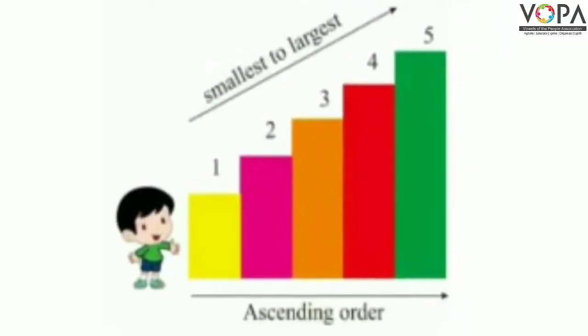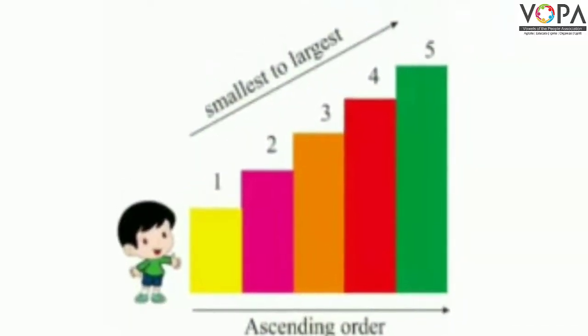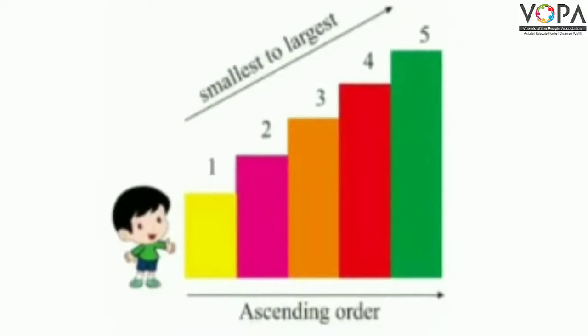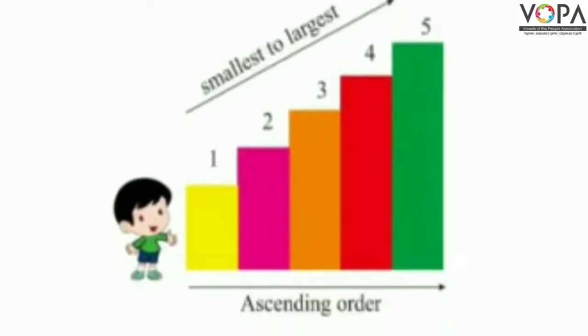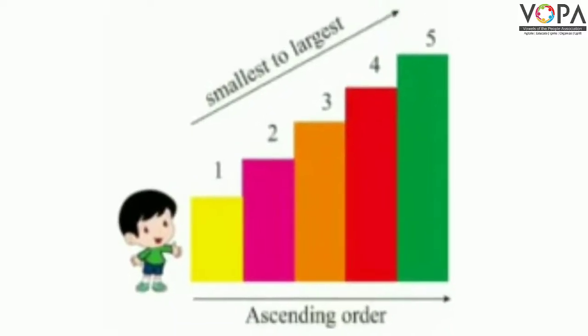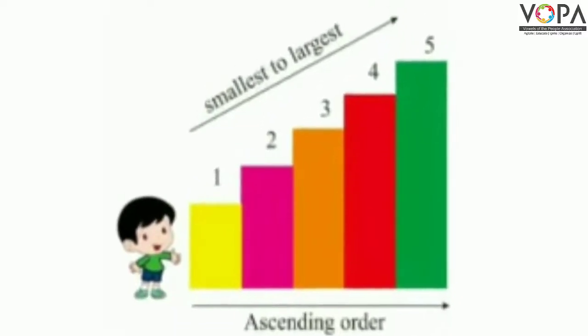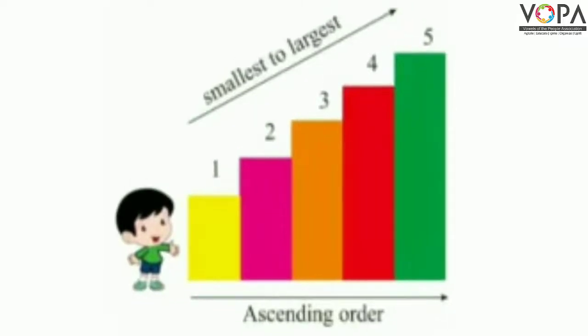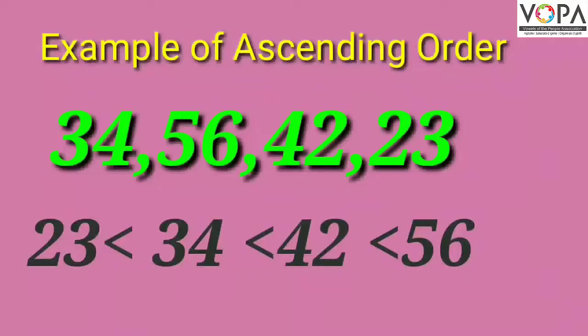Here I have numbers 1 to 5. In that order, we are increasing the numbers from small to large. Here is an example of ascending order.